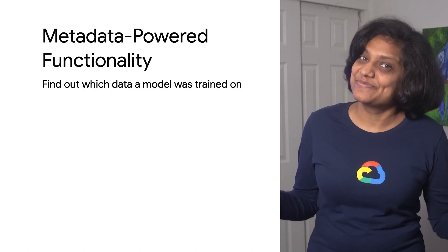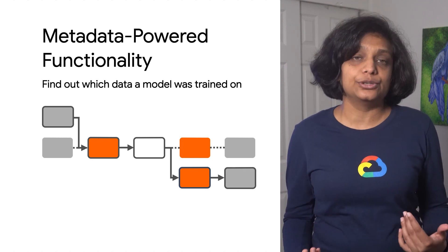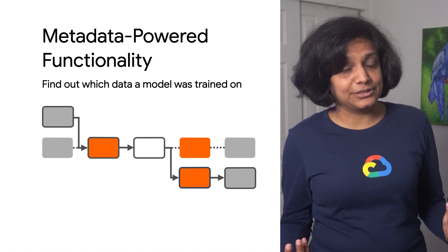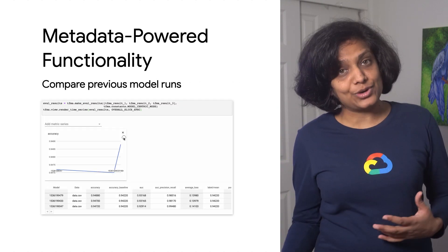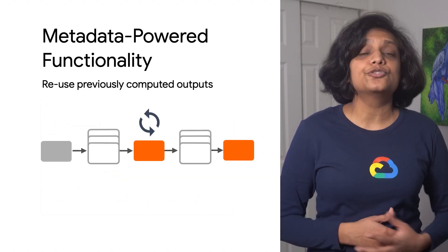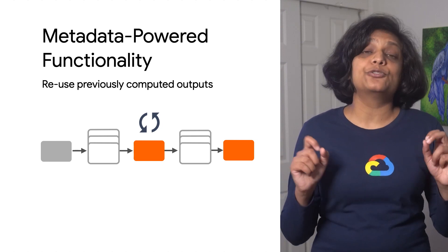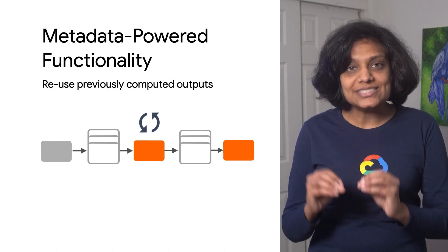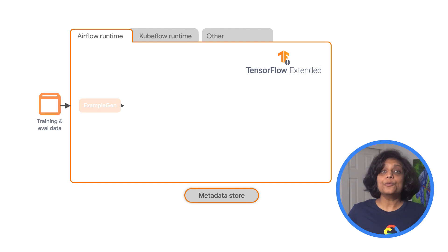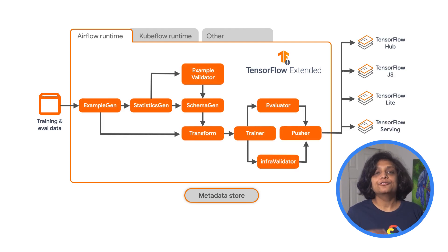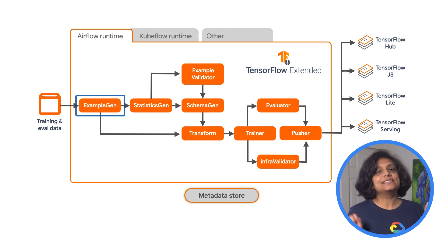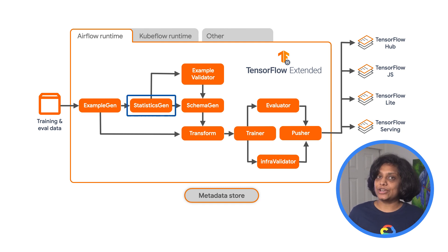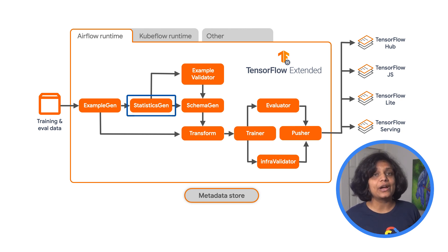Metadata allows us to trace the lineage of the artifacts that are produced — for example, what data is the model trained with? Metadata can also be used to compare previous training runs, and it allows tracking and reuse of previously computed outputs, which saves quite a bit of time, especially for larger data sets and models. If the input to a component has not changed, we don't want to rerun it — we should just pull the last result from the cache and reuse it. Now, ExampleGen helps us ingest our data from CSV files, BigQuery, Presto, et cetera. It splits the data and saves it off as TF examples and TF record files. StatisticsGen will make a full pass over that data and calculate statistics about it, which is important to understand our data if it is new or if it has changed over time.